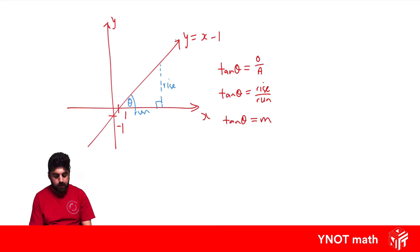So we get tan theta equals m, our gradient. This is a new equation we can use to find the gradient of a line, where the gradient of the line is going to equal tan of the angle that it makes with the x-axis.